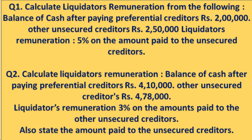Now I will read both questions first. Question number one: calculate liquidator's remuneration from the following. Balance of cash after paying preferential creditors is rupees 2 lakh. Other unsecured creditors is rupees 2 lakh 50,000. Liquidator's remuneration is 5% on the amount paid to the unsecured creditors. Calculate the liquidator's remuneration.